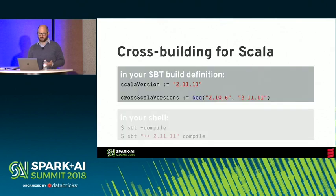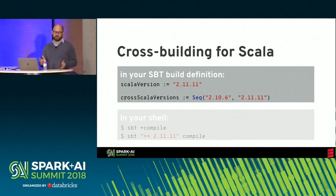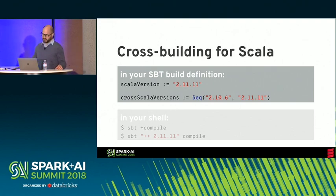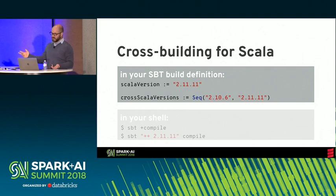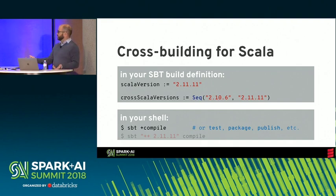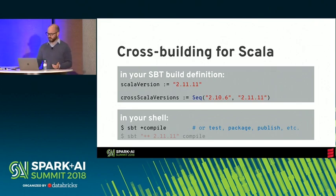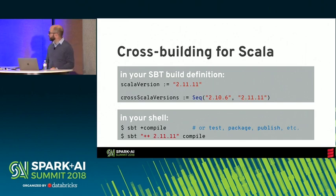A lot of the problems you'll run into as a library developer fall into one of two categories: challenges caused by users not using your code in ways you anticipated, and challenges related to doing things the right way instead of relying on an ad hoc solution. Starting with not being able to predict the environment people will use your code in: if you're developing a Scala library, code built with one version of Scala isn't compatible with another, so you'll want to use SBT's cross-building facility.